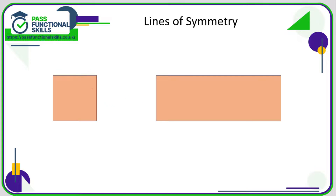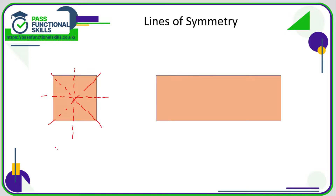A square has a line of symmetry going vertically, one going horizontally, and also lines of symmetry across both diagonals. So in total, a square has four lines of symmetry.